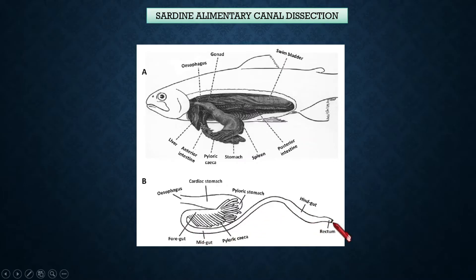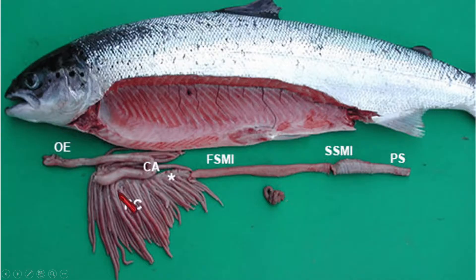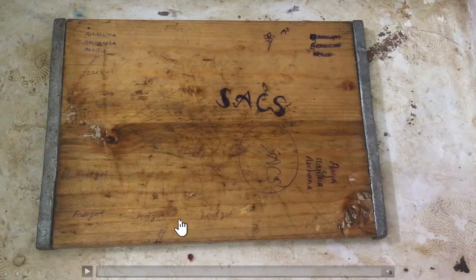After the stomach it is followed by a portion of intestine, and it ends up in the rectum. So these are the parts. I'm going to show you one more close look at the pyloric caeca — this is not from a sardine fish, but anyhow this is the appearance. Okay, so let's start the practical.